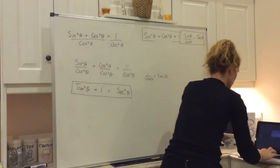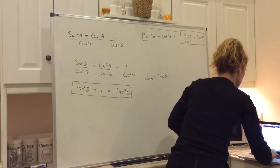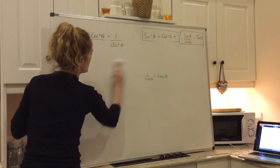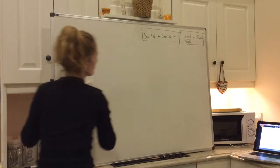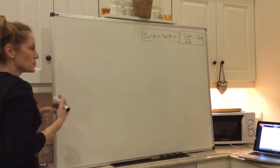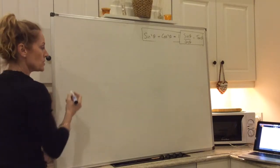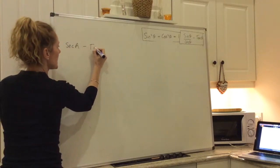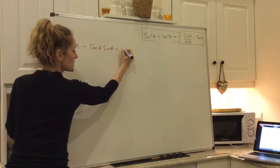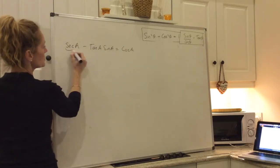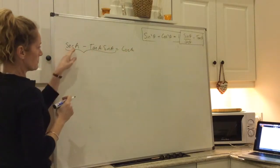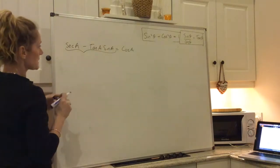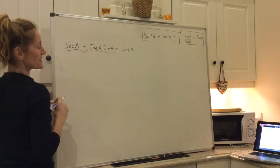I'm going to have a quick look at the two examples that have been given. Really with these, it's practice and just putting in pieces of information that you know, which you do in an educated way when you look at what you're trying to prove. So example one is to prove that secant a minus tan a times sine a is equal to cosine a. I'm going to take the left-hand side and show that by replacing some of these with equivalent trigonometric identities, the left-hand side equals the right-hand side.